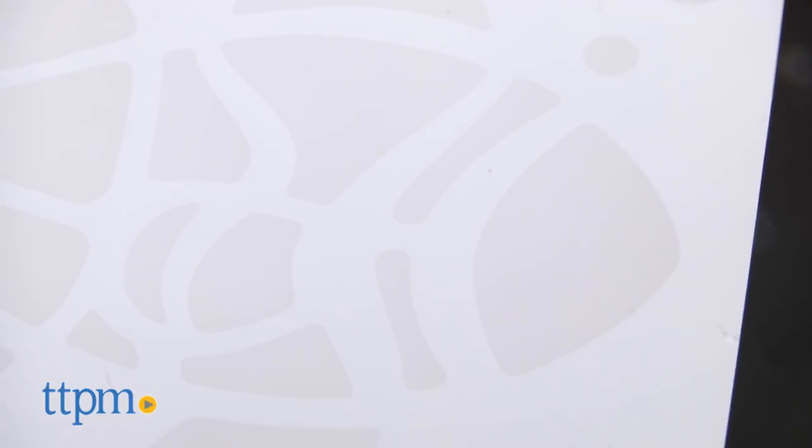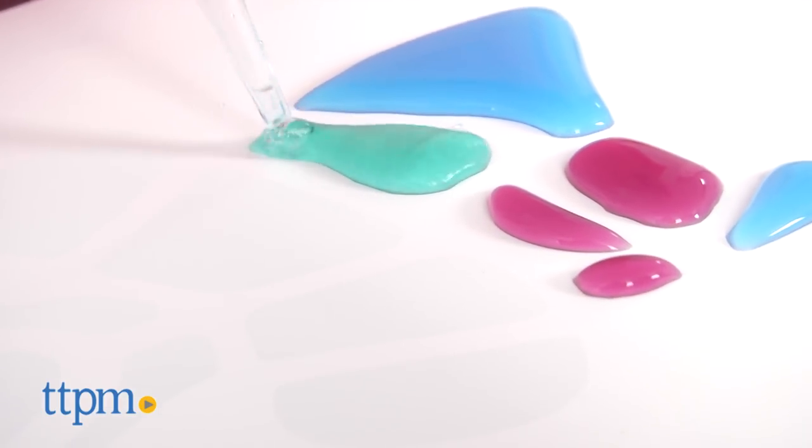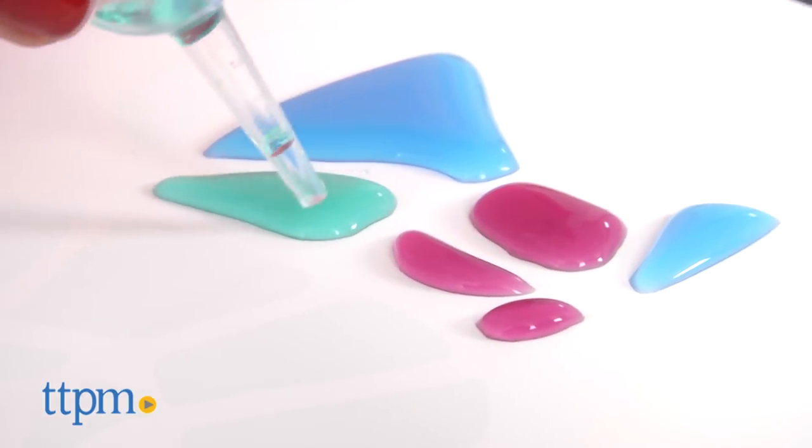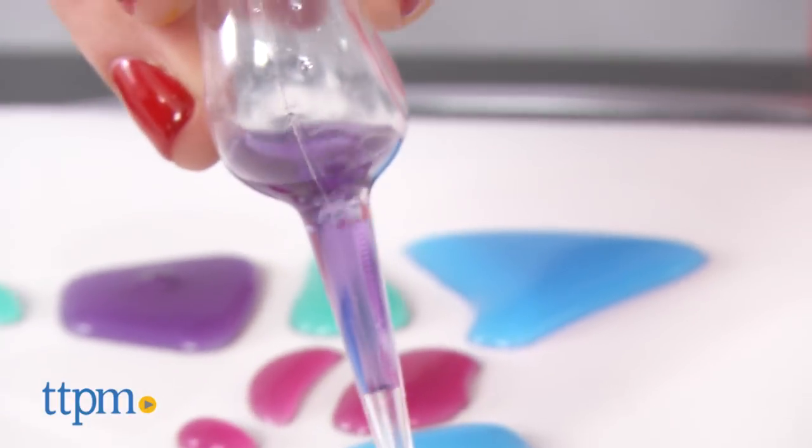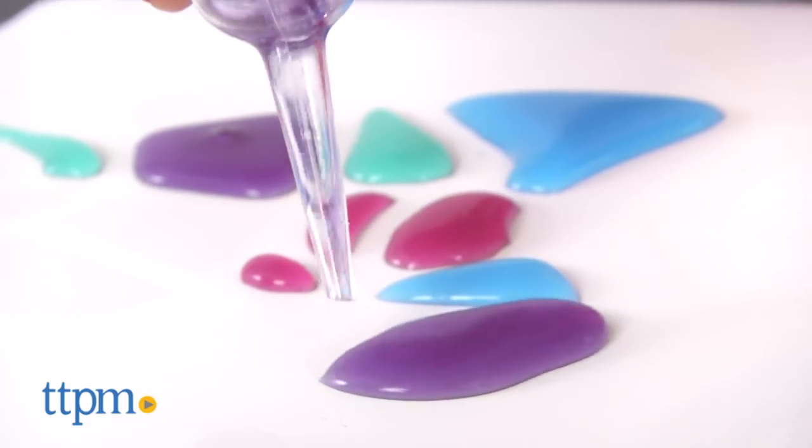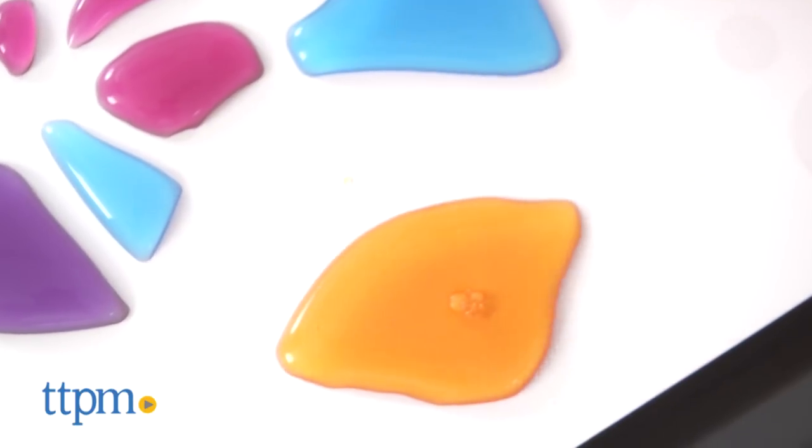Each art sheet has special segments that react with water to make a design. To start creating, fill the aquapen with the first color of your choice and gently squeeze the colored water onto the segments you want that color. Then choose the next color and so on.